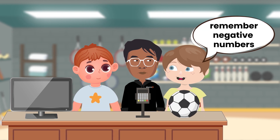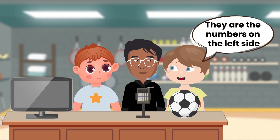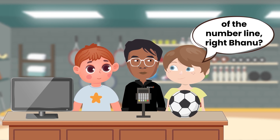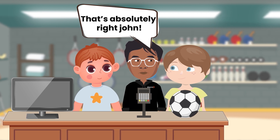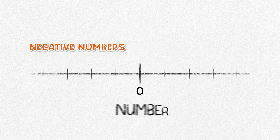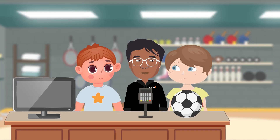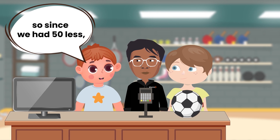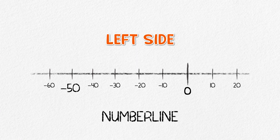Oh Banu, I remember negative numbers from your previous lessons about the types of numbers. They are the numbers on the left side of the number line. Right, Banu? That's absolutely right, John. Negative numbers are found on the left side of the number line and they are used to represent the loss of a value. So since we had 50 less, this would be represented as minus 50 on the number line. Right, Banu?